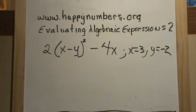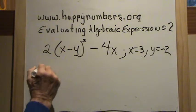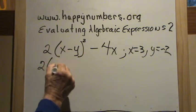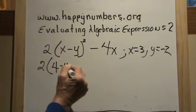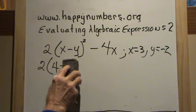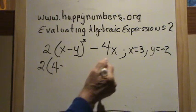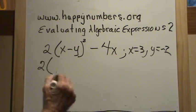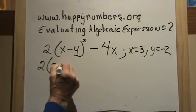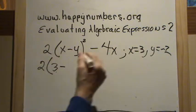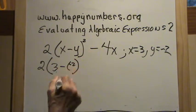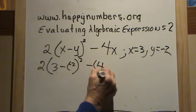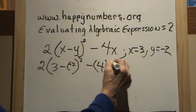First thing we do is substitute. We have 2 times the quantity 3 minus negative 2, squared, minus 4 times x, which is 3.